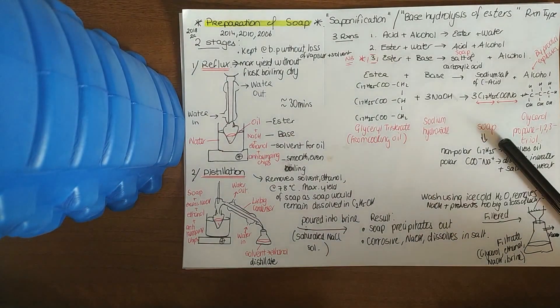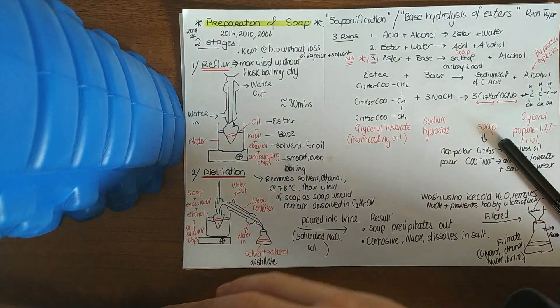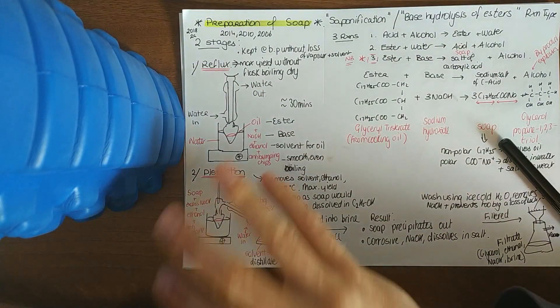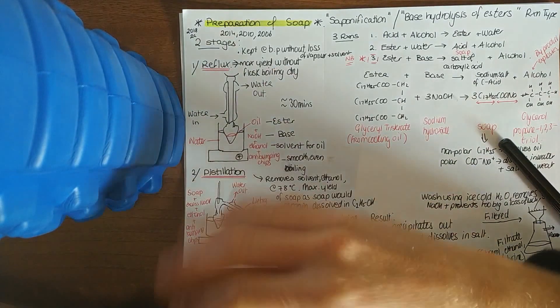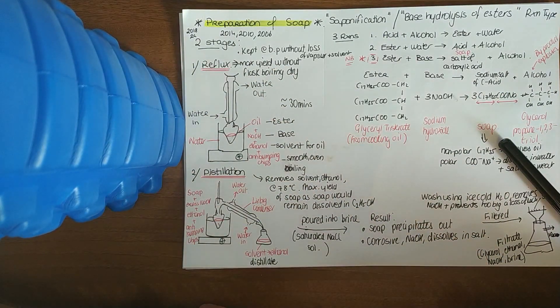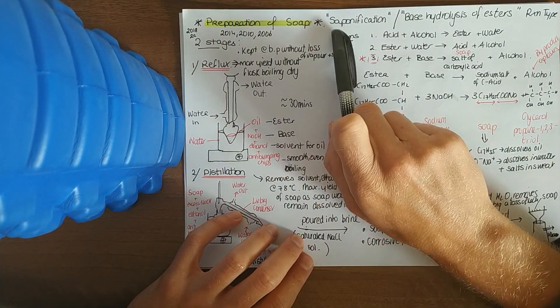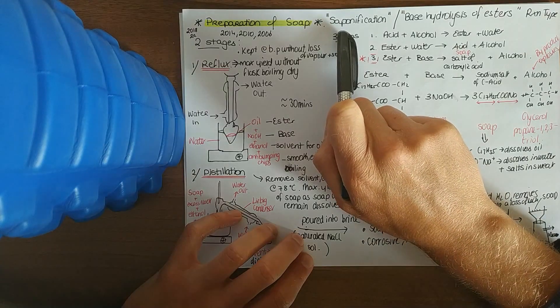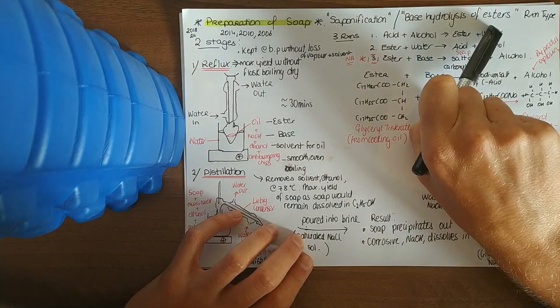Someone was asking about the preparation of soap experiment. This goes into the category of question twos in your organic section of experiments. Question one being your titrations, question two being your organic experiments. The preparation of soap, the reaction mechanism is known as saponification or base hydrolysis of esters.